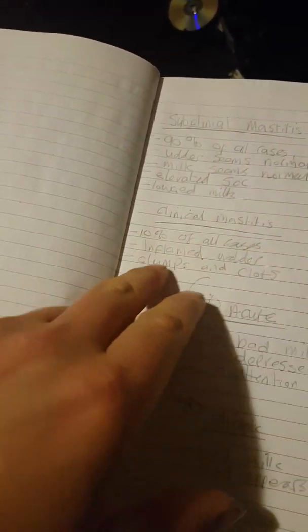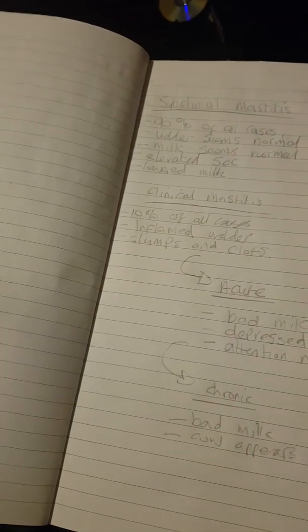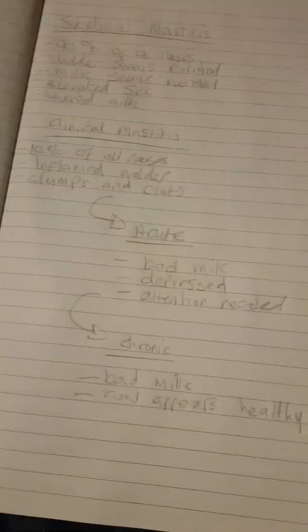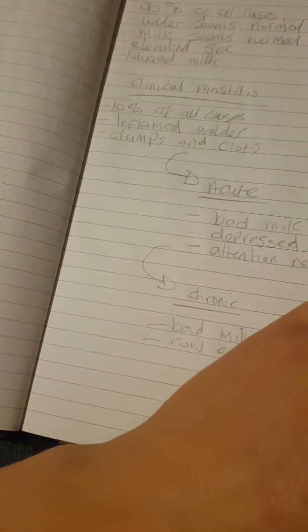Obviously clinical mastitis is 10% of all cases, where your udder is inflamed, it's hard, it's sore, the clumps and clots will come out, which is quite very sore and painful for the cow. That's why you tube the cow after when you've milked her.